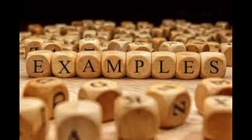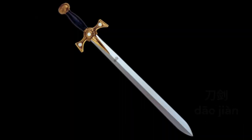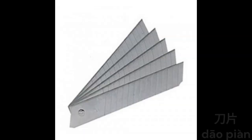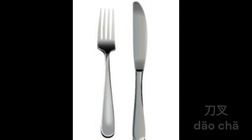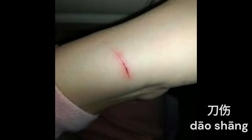Now let's see some examples. 剪刀 — Scissors. 刀剑 — Sword. 刀片 — Razor blade. 刀叉 — Knife and fork. 刀具 — Cutting toolset. 刀伤 — Wound inflicted with a knife or sword, a gash or stab.